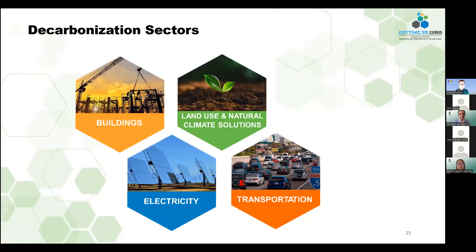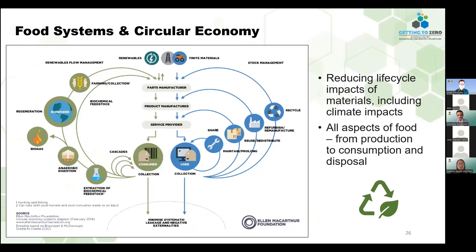Buenas noches a todos. He compartido anteriormente las opiniones de las partes interesadas acerca de los sectores de decarbonización: electricidad, transportación. Basado en esto, hemos agregado un quinto sector: los sistemas de alimentos y la economía circular. Esta es la imagen del EPA. Lo que queremos resaltar es el movimiento cíclico y el continuo flujo de los materiales y el proceso para representar una economía circular, la cual se define como reducir el ciclo de vida de los impactos de los materiales y recapturarlos como recursos para hacer nuevos materiales y productos.